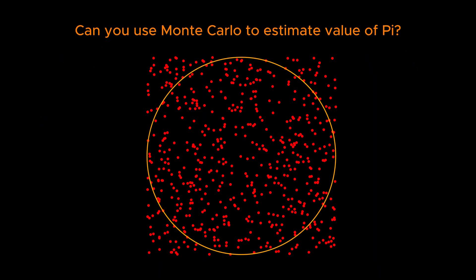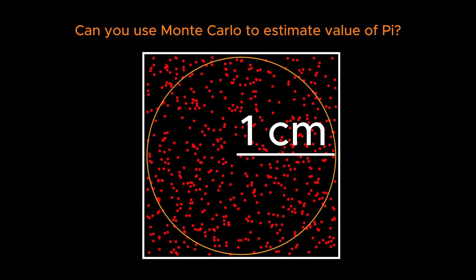Now let's use this method to find an estimate for the value of pi. For that, we replace the irregular shape with a circle of radius 1 cm, enclosed by a square, whose sides are each 2 cm.